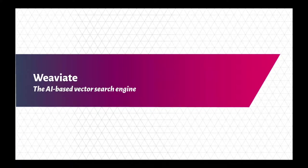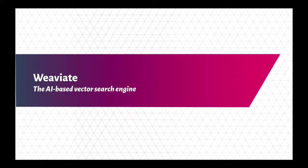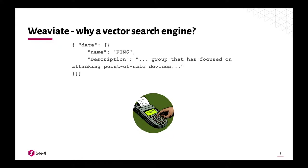Weaviate is a vector search engine — it's a full cross-support database. The most important thing to bear in mind is the difference between traditional search engines and vector search engines like Weaviate: Weaviate focuses on the vector representation of the data stored within it, and those vector representations are produced by machine learning models.